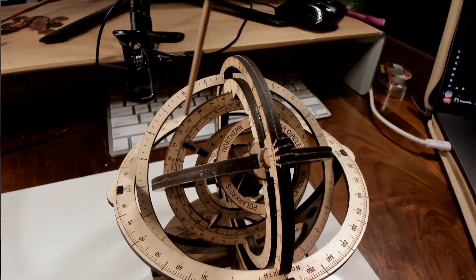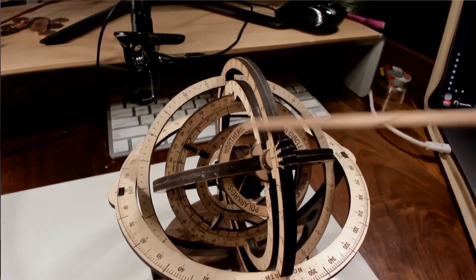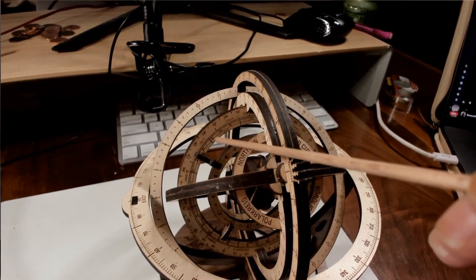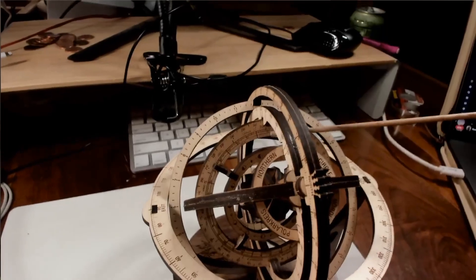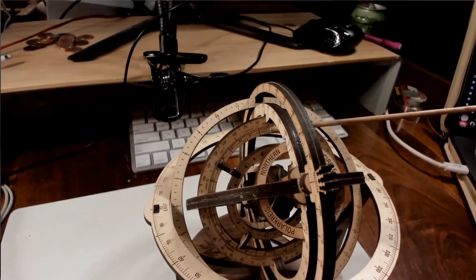This ring right here is called the ecliptic of the Sun. So notice that there are dates on the ecliptic ring. For example, this would be July 10th. This spot right here, underneath our meridian, that would be June 21st.